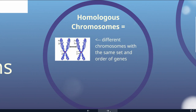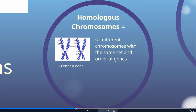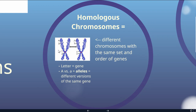Homologous chromosomes are chromosomes with the same set and order of genes. When you have two copies of chromosome 1 — one from mom, one from dad — those are homologous chromosomes. The drawing shows different letters along the chromosome representing specific genes. So maybe gene A is for whether you have freckles, gene B is for your hair color, and gene C is for what kind of skin pigments you produce.